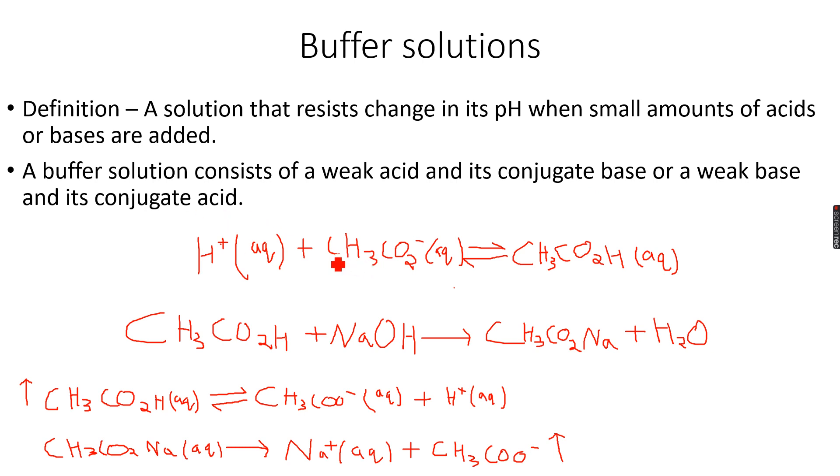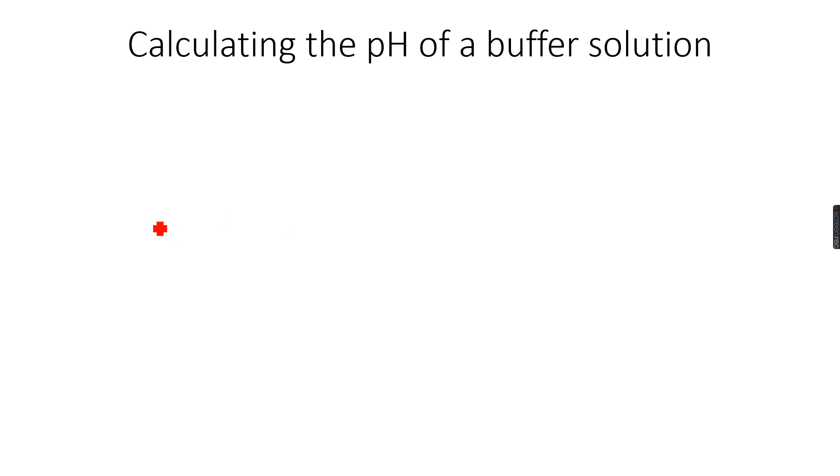So calculating the pH of a buffer solution - for this we use something called the Henderson-Hasselbach equation. So this equation is pH equals pKa, which is the acid dissociation constant, the negative log10 of the acid dissociation constant.